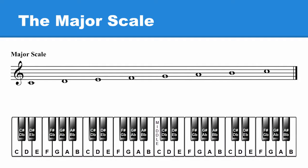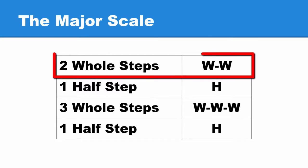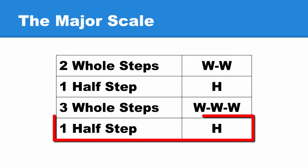The major scale is created using a specific sequence of whole steps and half steps: two whole steps, one half step, three whole steps, one half step.